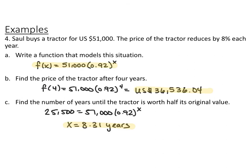If the tractor depreciates by 8% each year, it keeps 92% of its worth each year. So the function is f of x equals 51,000 times 0.92 to the x. To find the price after 4 years, plug in x equals 4, giving $36,536.04. To find when the tractor is worth half its original value, half of $51,000 is $25,500. Set the function equal to $25,500 and use the graphing calculator to find the intersection: x equals 8.31 years. Since depreciation is continuous, the answer is 8.31 years.